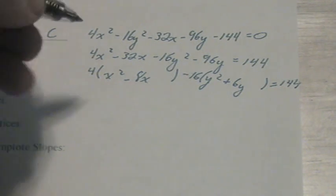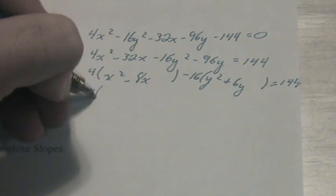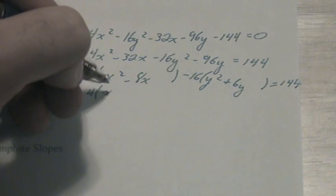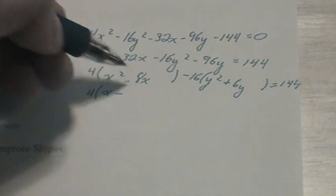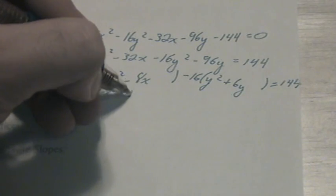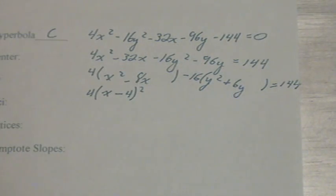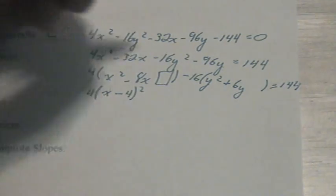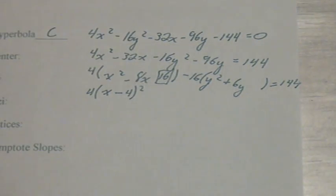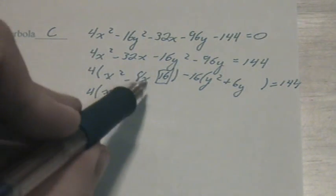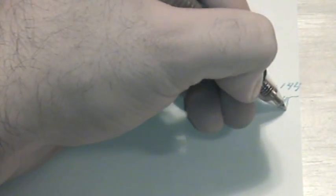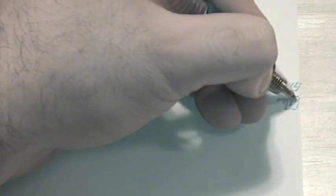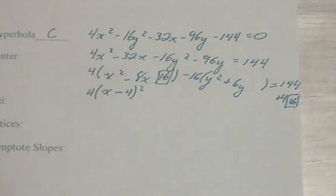Now we're ready to complete the square. We'll have 4 times x minus 4 squared, since half of negative 8 is negative 4. So in this box we're going to put a 16. Over here, since this box is being multiplied by 4, we're going to say plus 4 times 16.